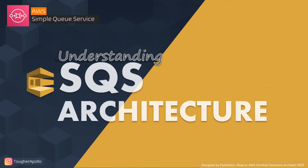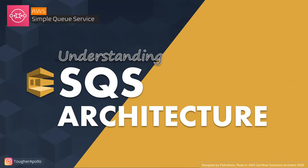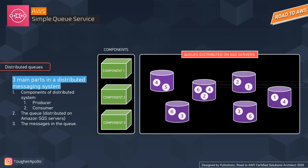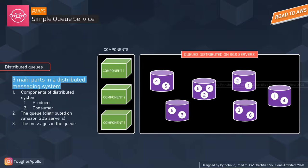Let's talk about the architecture of AWS SQS. To understand this, we need to discuss the concept of distributed messaging systems and the lifecycle of an Amazon SQS message. There are three main parts in a distributed messaging system: the components (producers and consumers), the queue (the AWS SQS distributed queue), and the messages in the queues themselves.